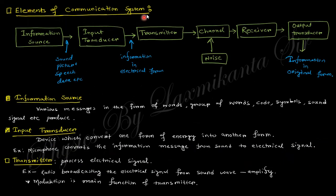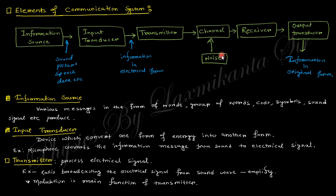The elements of the communication system include: the information source, which is converted by transducer into sound, picture, speech, data, etc. This is the input transducer which takes the information and converts it into electronic form, then encodes and transmits it. The signal then goes through the channel. During channel transmission, there is a possibility of noise mixing with the signal. Then the receiver and output transducer change the information back into symbols, images, or audio signal, so information is transferred from one person to another.